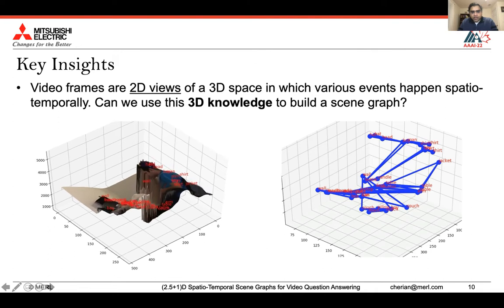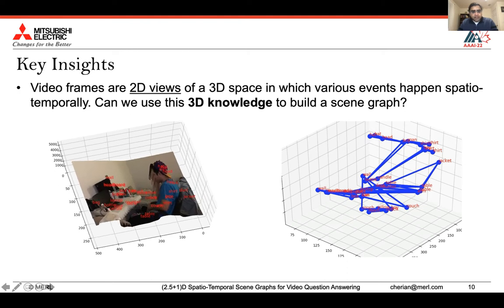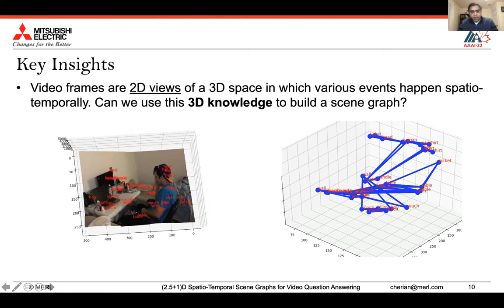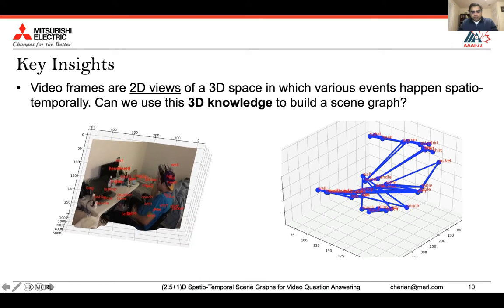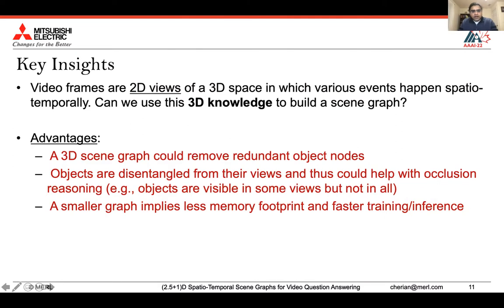Our key insight is to consider the video as a view of a 3D scene. An ideal and minimalistic semantic representation would be to transform the video back to the 3D scene. There are several obvious advantages: redundant graph nodes can be removed and mapped to unique objects in the 3D scene, objects can be disentangled from their views allowing reasoning even when occluded, and a smaller graph implies better and faster training and inference.